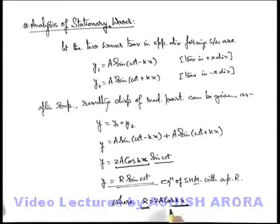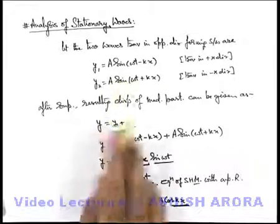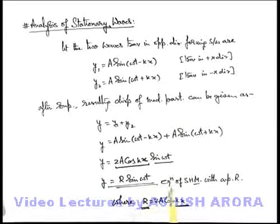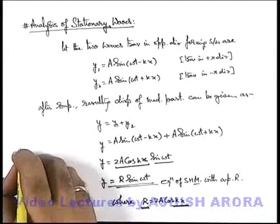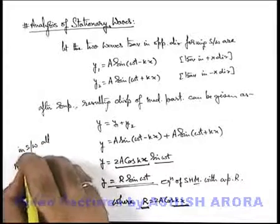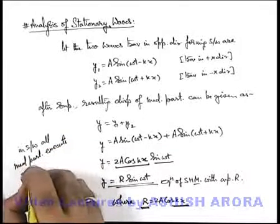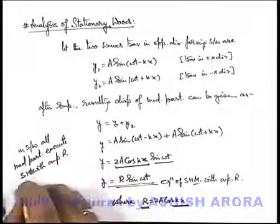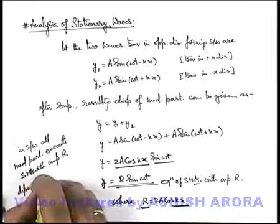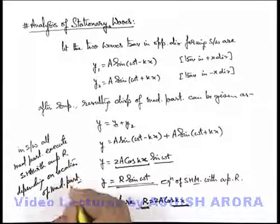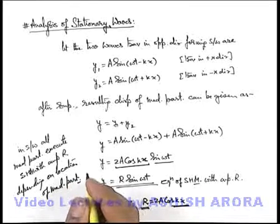This confirms what we analyzed qualitatively in the previous section: that in stationary waves, when two coherent waves traveling in opposite directions superpose, the oscillation amplitude of all medium particles is modified such that their amplitude depends on position — which we are now getting mathematically. So we can say that in stationary waves, all medium particles execute SHM with amplitude R depending on the location of the medium particle.